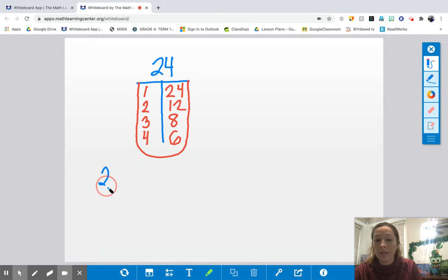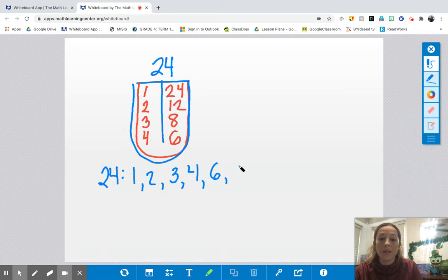So now we write them in order. You could just follow your tongue all the way around to get them in order. 1, 2, 3, 4, 6, 8, 12, 24. 1, 2, 3, 4, 6, 8, 12, and 24.